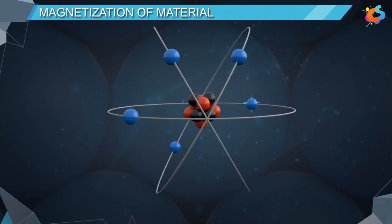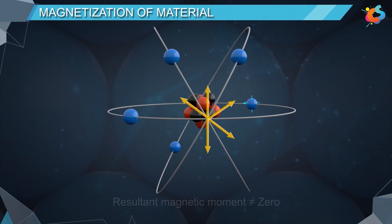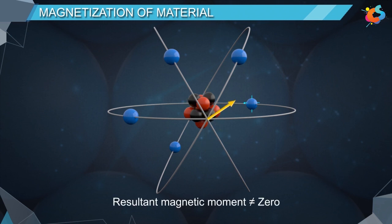Some elements have unpaired electrons in their orbitals. In such atoms, the magnetic moment of the unpaired electron is not cancelled due to the absence of a paired electron. Due to this, the resultant magnetic moment in the atom will not be equal to zero, and the atom behaves like a tiny bar magnet.